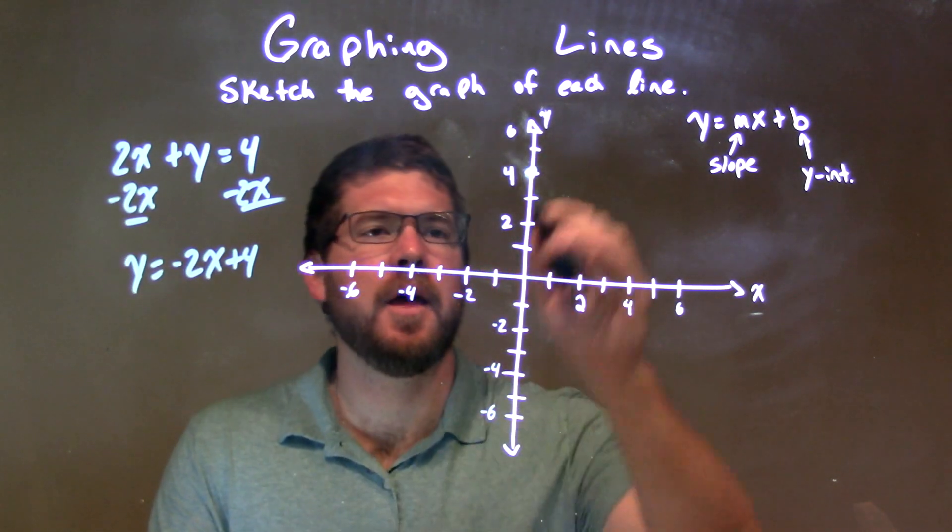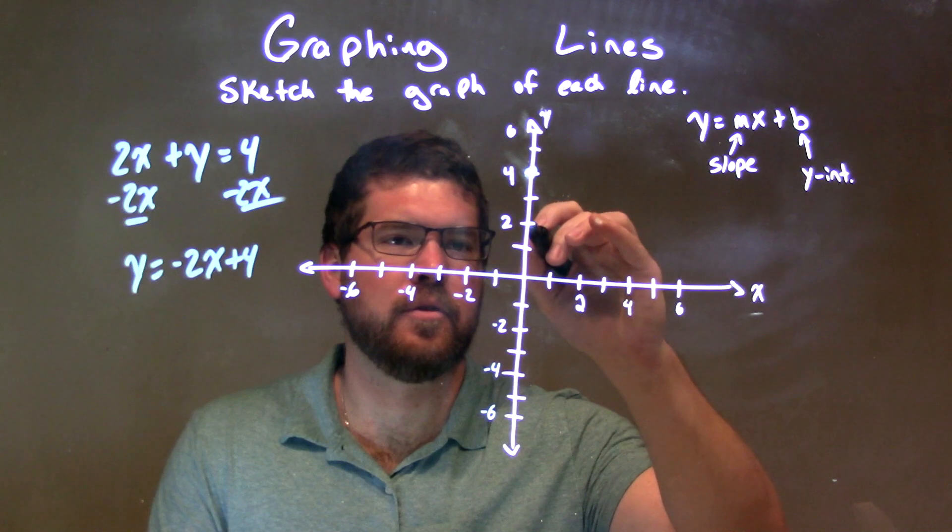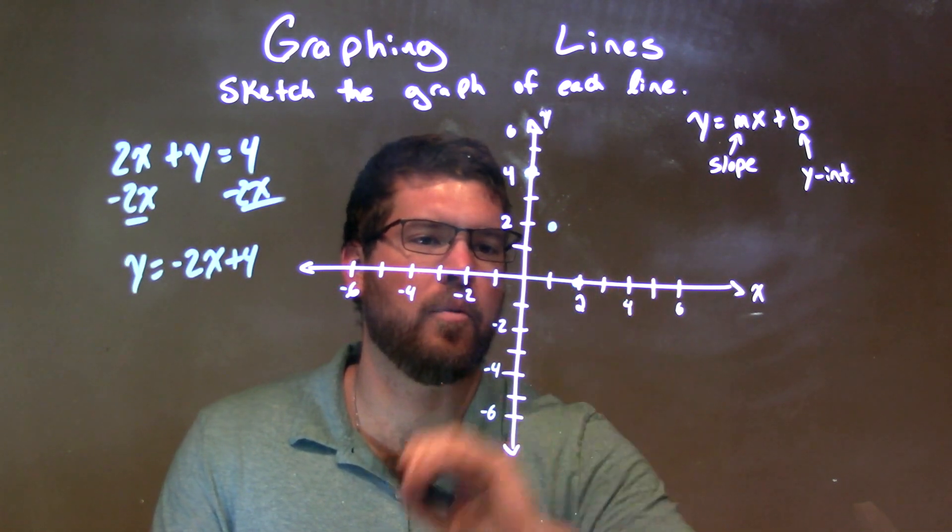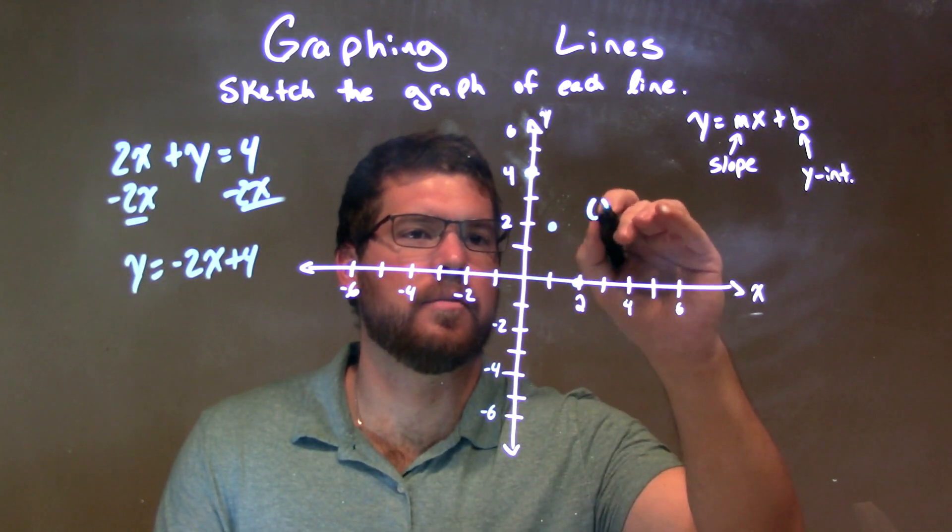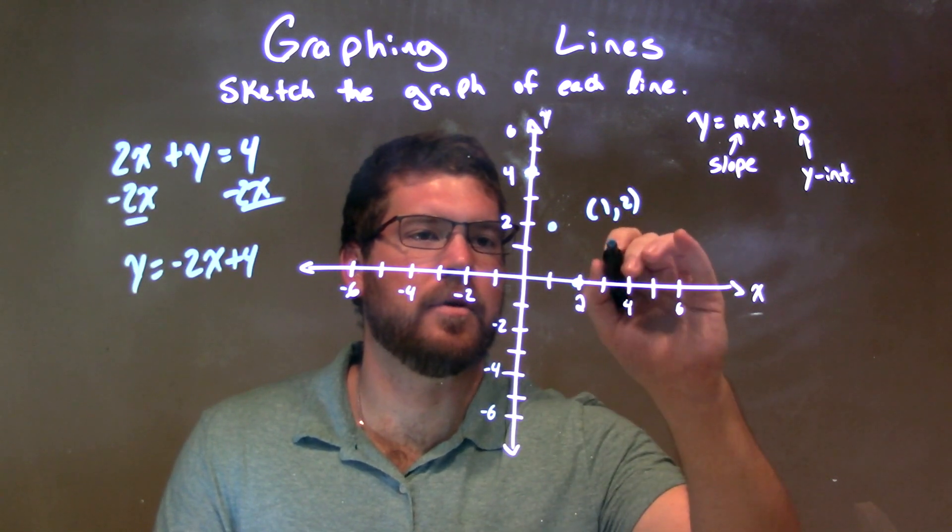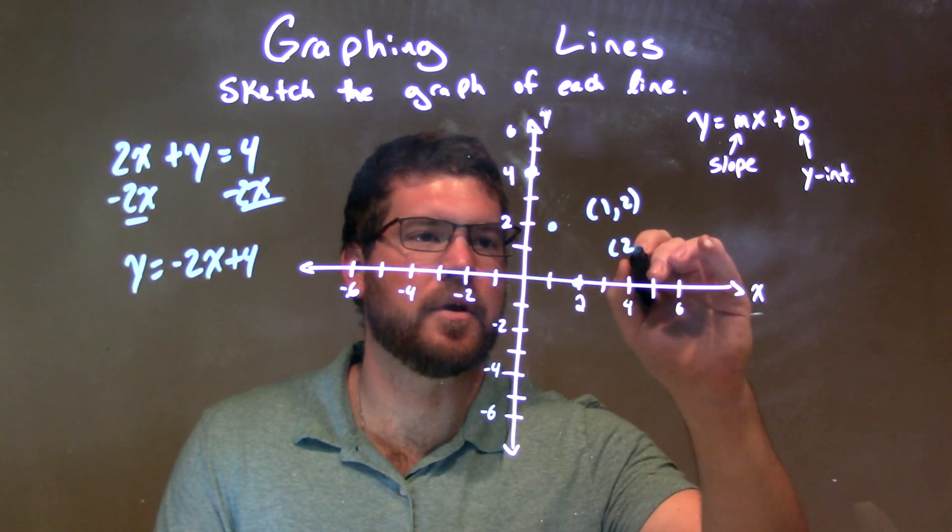I have the b-value, and slope is negative 2. So we go down 2 units over 1, and then down 2 units over 1. Okay? And this point here is 1,2, and then this one here is 2,0.